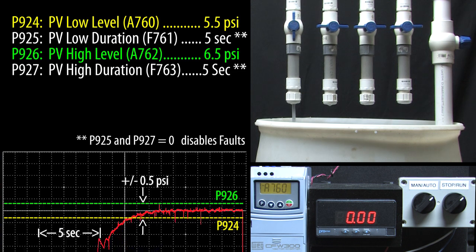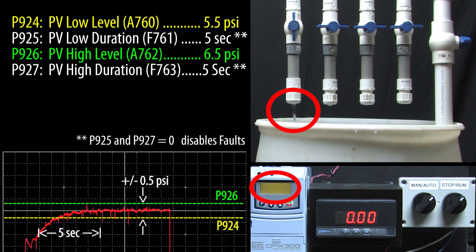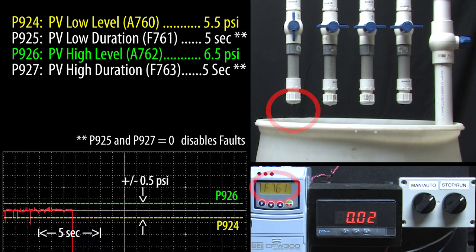I'll short the sensor to ground to simulate a sudden drop in pressure and we get the low pressure alarm. That occurs 150 milliseconds after the condition starts. And then after 5 seconds we get a fault, the drive shuts down its output and the motor goes to a stop. Exactly what we expect.